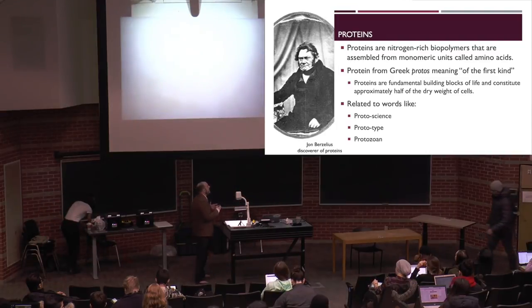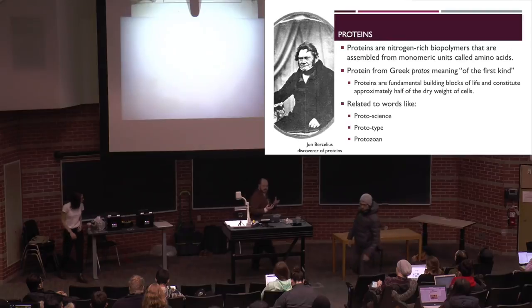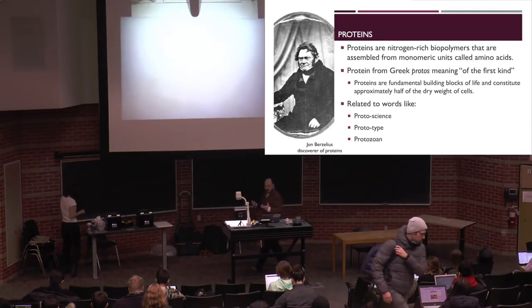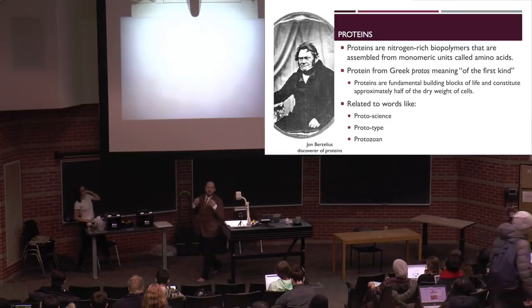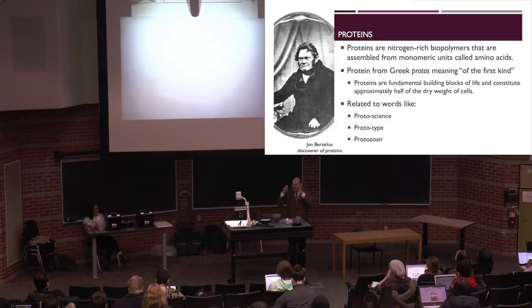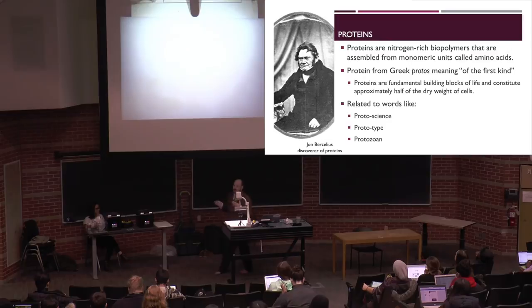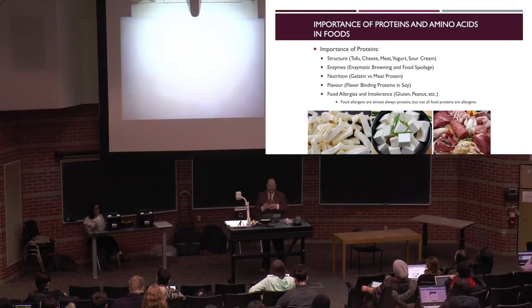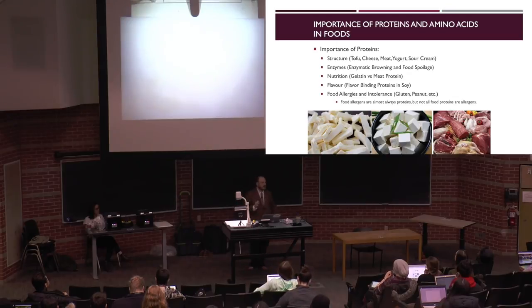Proteins are carbon-based materials that are nitrogen-rich. The prefix 'pro' in protein describes 'first of kind' — proteins are very fundamental for life. They're what's coded by DNA, so they're very, very important. When we talk about proteins in food science, they play a lot of very important roles.